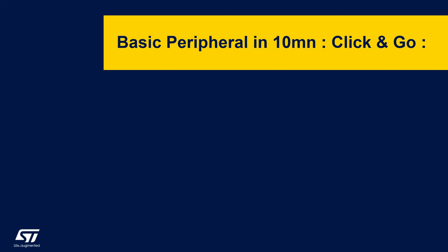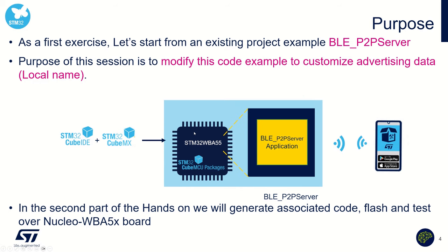Now, I think you are all set. We all have prerequisites installed on our laptops and we all have the material, so it's time to start. As a first exercise, we will use the BLE Peer-to-Peer Server code example, which is an existing code example. We will import it and modify it to customize the advertising data.